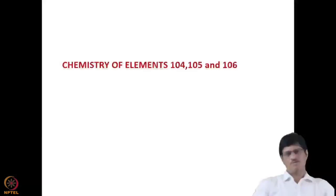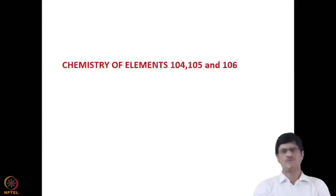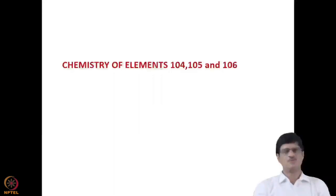We are discussing the transactinides and today we will be covering the chemistry of some transactinide elements: element number 104, 105, and 106. The chemistry of transactinides mostly involves two types: gas phase chemistry and solution phase chemistry.